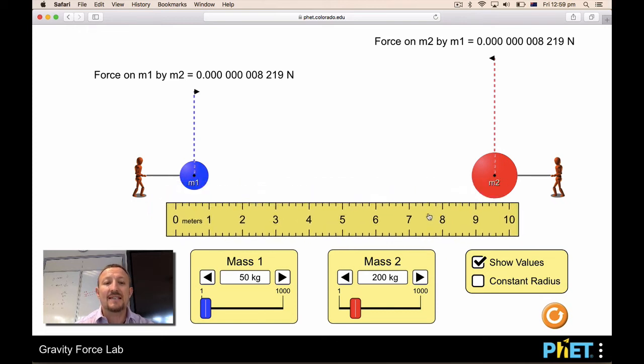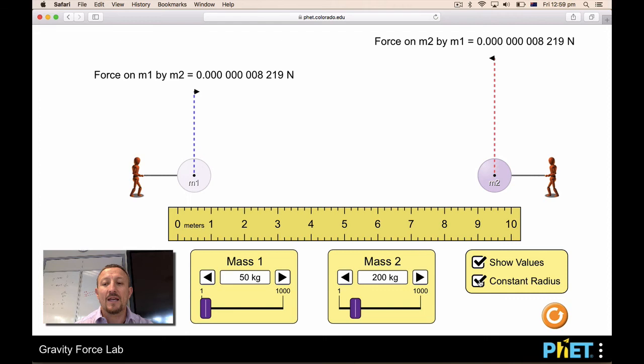You can change the density of the masses by putting a constant radius so they're always the same size. As a result, as you increase the mass, you can see that we increase the mass but the radius of the actual particle doesn't change. So it's a fairly simple simulation but works really well when we're looking at deducing the law of gravitation which was set up by Isaac Newton.